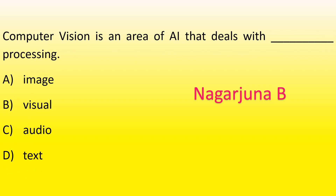Next MCQ: Computer vision is an area of AI that deals with dash processing. Options: image, visual, audio, text. The right answer is option B, visual.